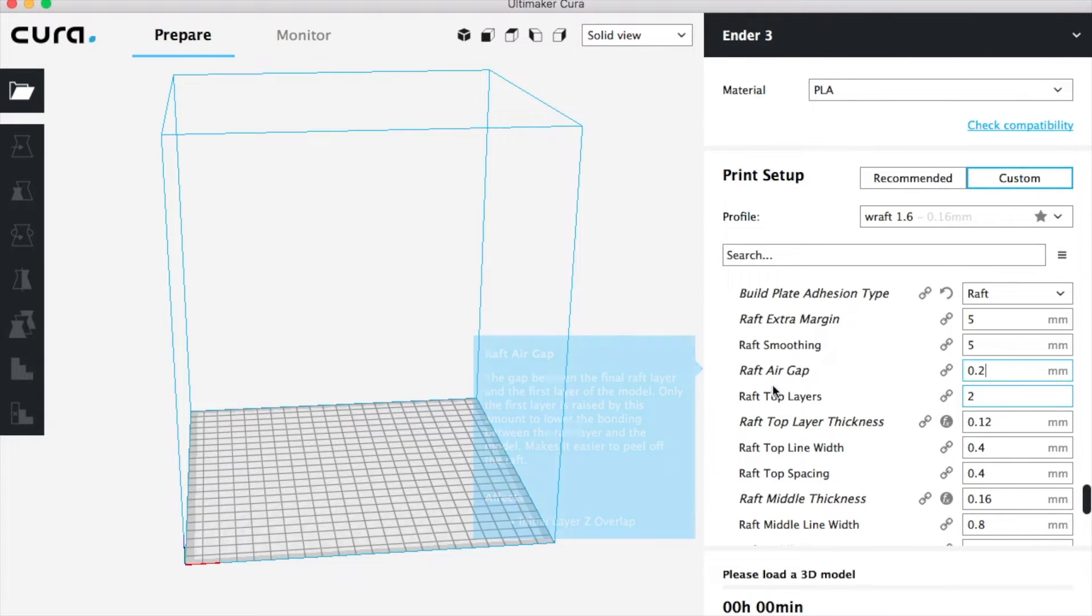So the first thing we're going to do is look at raft air gap, and this is basically the gap between the raft and your model. Leaving a gap between your raft and the model actually helps you peel it off a little bit easier without having the model sticking to the raft. So the number that he used, which worked for me and I'll show you in the print down the line, is 0.2, so make sure you change it to that.